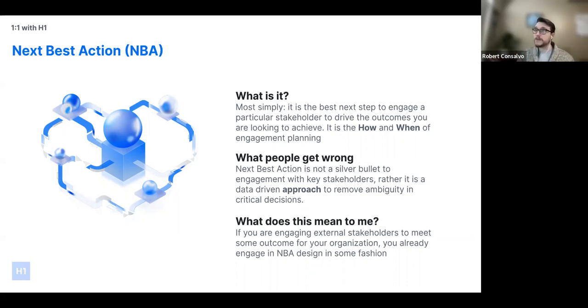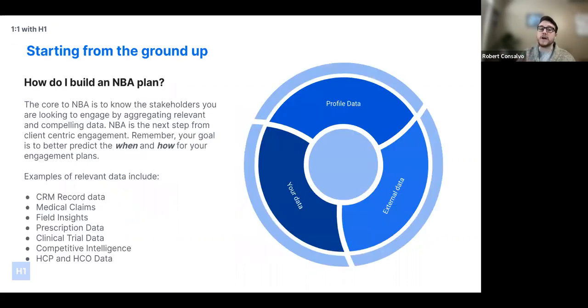Really, the only way to know what you should be doing next, that next best action piece, is to know who you should be doing that with. We really want to help you uncover that how and when from an engagement perspective, because that's what's going to drive the strongest results. But it's important to also note that next best action planning, it's not a silver bullet. This is an approach, a data-driven approach designed to remove ambiguity. At the end of the day, if you're already engaging stakeholders, you're doing some form of this.